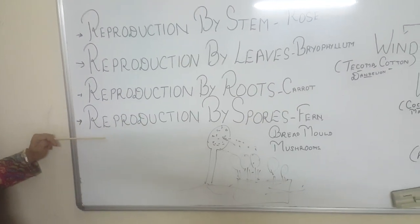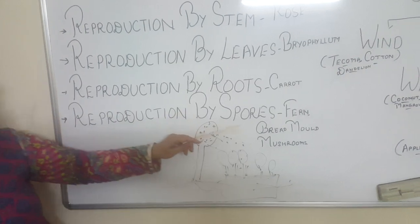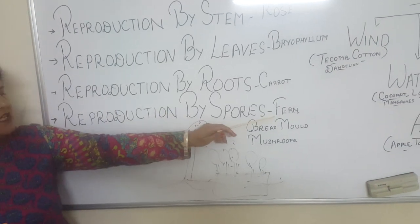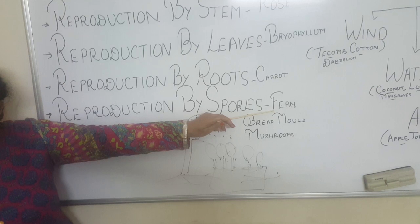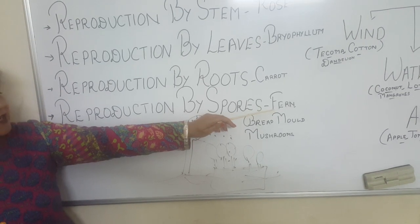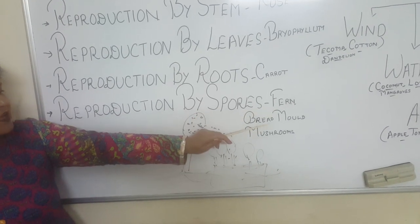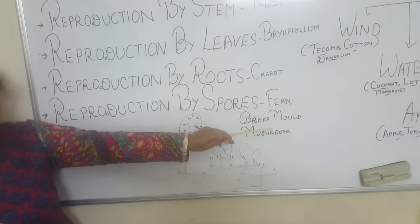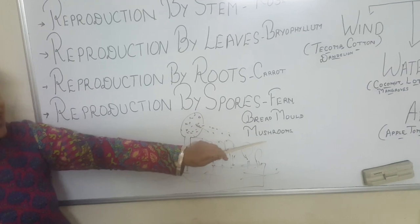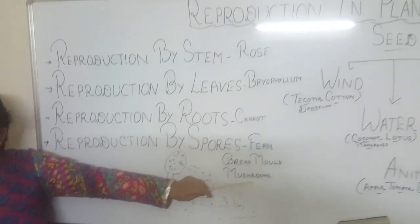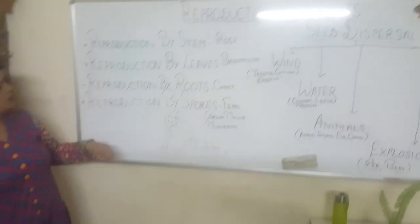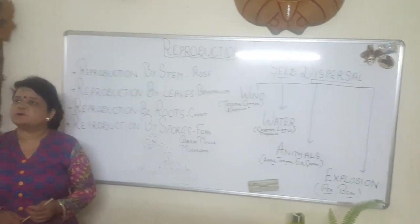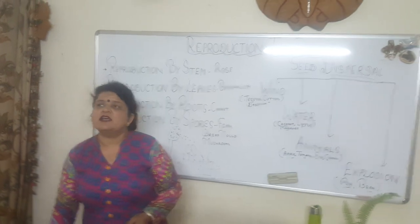Then we talked about reproduction by spores. We saw the fern plant, a non-flowering plant that reproduces with the help of spores. Bread mold also reproduces with the help of spores, and the same is true for mushrooms. So this is all about reproduction by stem, leaves, roots, and spores.